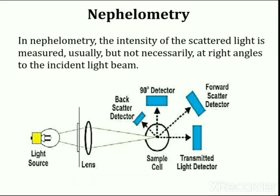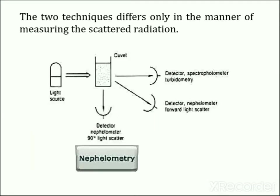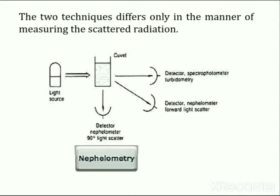In nephelometry, the intensity of scattered light is measured, but measurement at any specific angle is not a necessity. This means that the detector can be positioned at any angle. So these two techniques differ only in the manner of measuring the scattered radiation. Turbidity can be measured on most routine analyzers such as a spectrophotometer, while the intensity of scattered light is normally measured by a nephelometer.